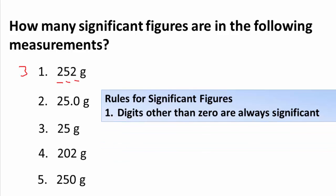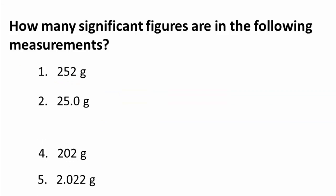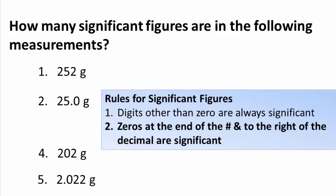The second rule: zeros at the end of the number and to the right of the decimal are significant. Looking at the number 25.0 — the 2 and the 5 are both significant because they're non-zeros. The 0 is also significant because it fills both qualifications: it is at the end of the number, and it's to the right of the decimal. So 25.0 also has three significant figures.